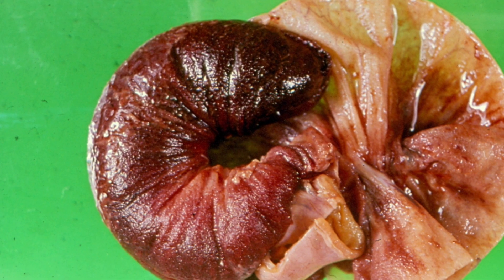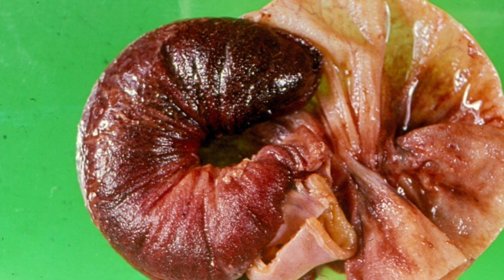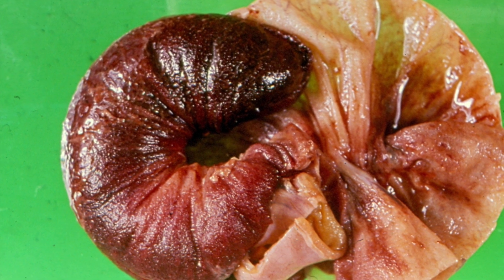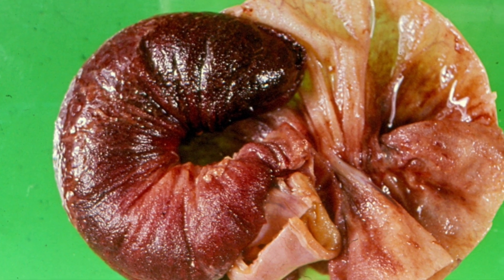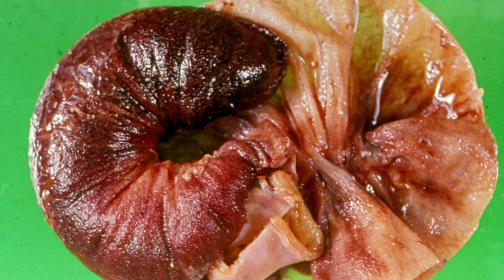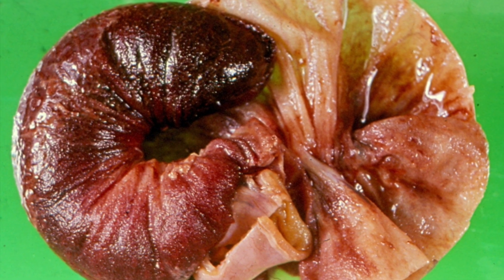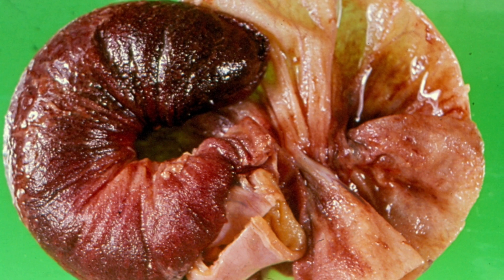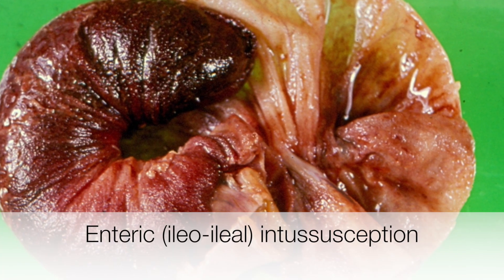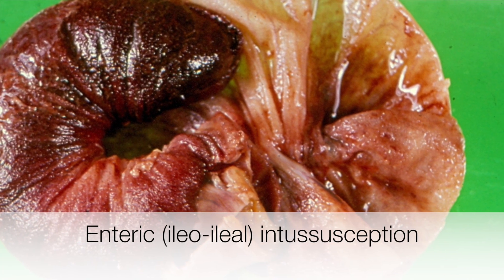So in this picture you can see the intussusceptum on the left and the intussuscipiens on the right. This intussusception just involves the small bowel, so this is an enteric or ileo-ileal intussusception.